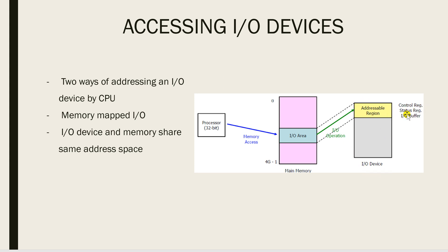Each I/O device has a control register, status register, and I/O buffer dedicated to it, along with an addressable region — the set of addresses allotted to the device. In memory-mapped I/O, a particular area in main memory is shaded and marked as the I/O area, and that is mapped to the addressable region of the I/O device.